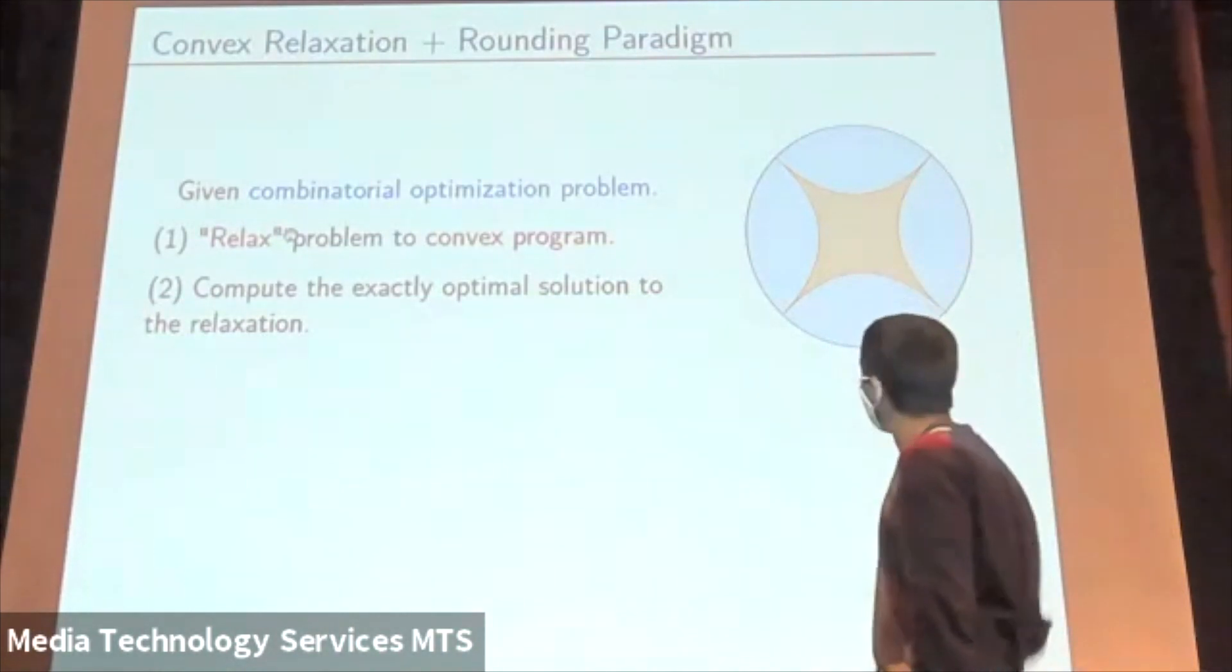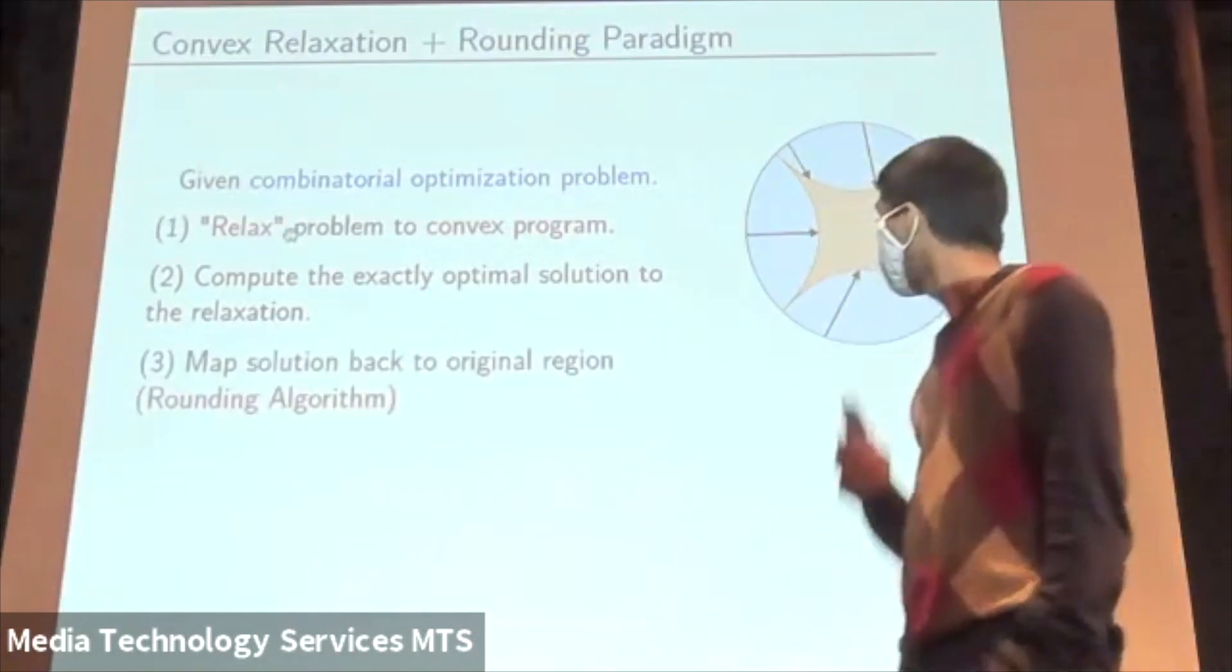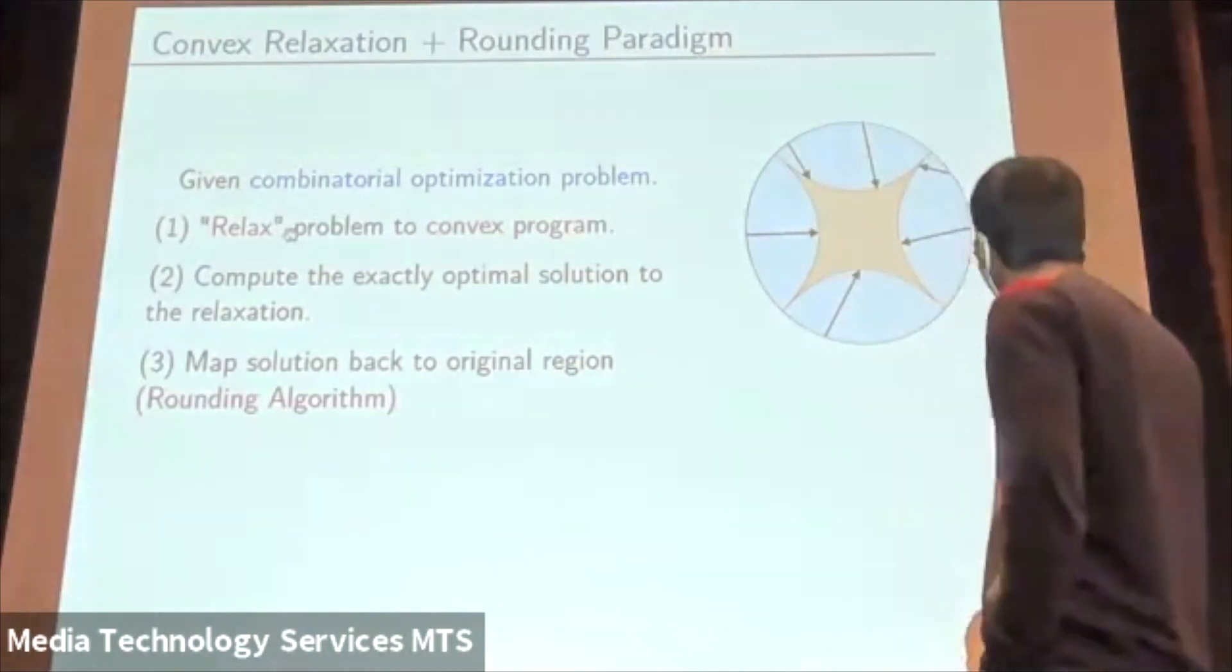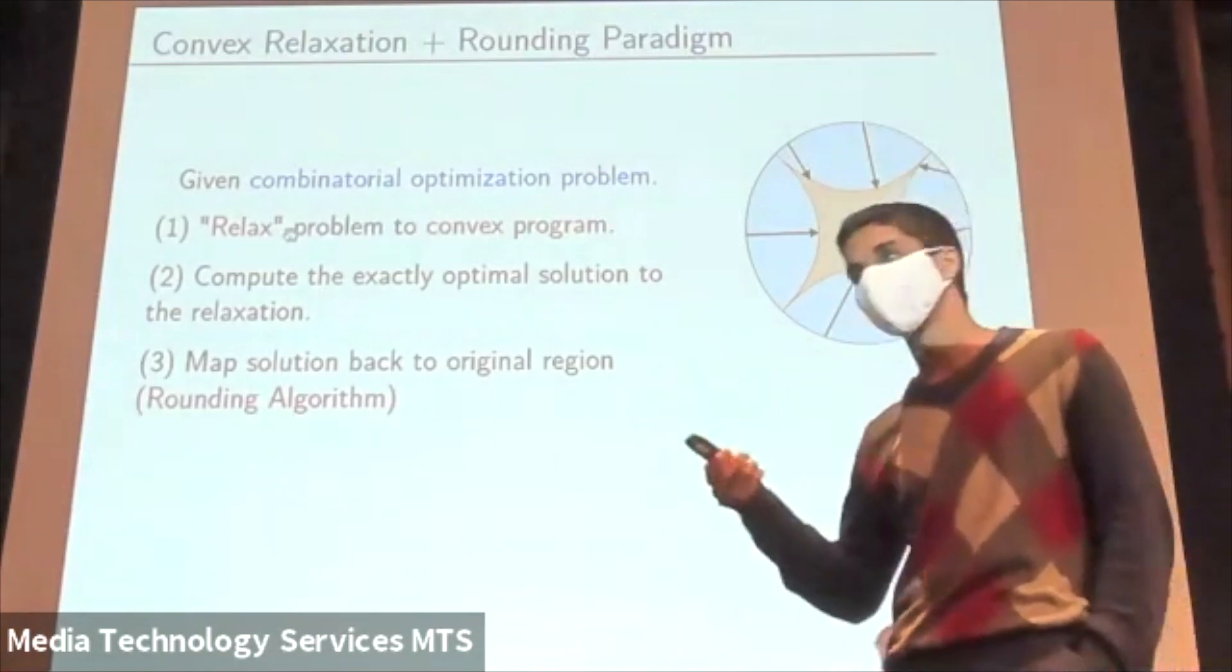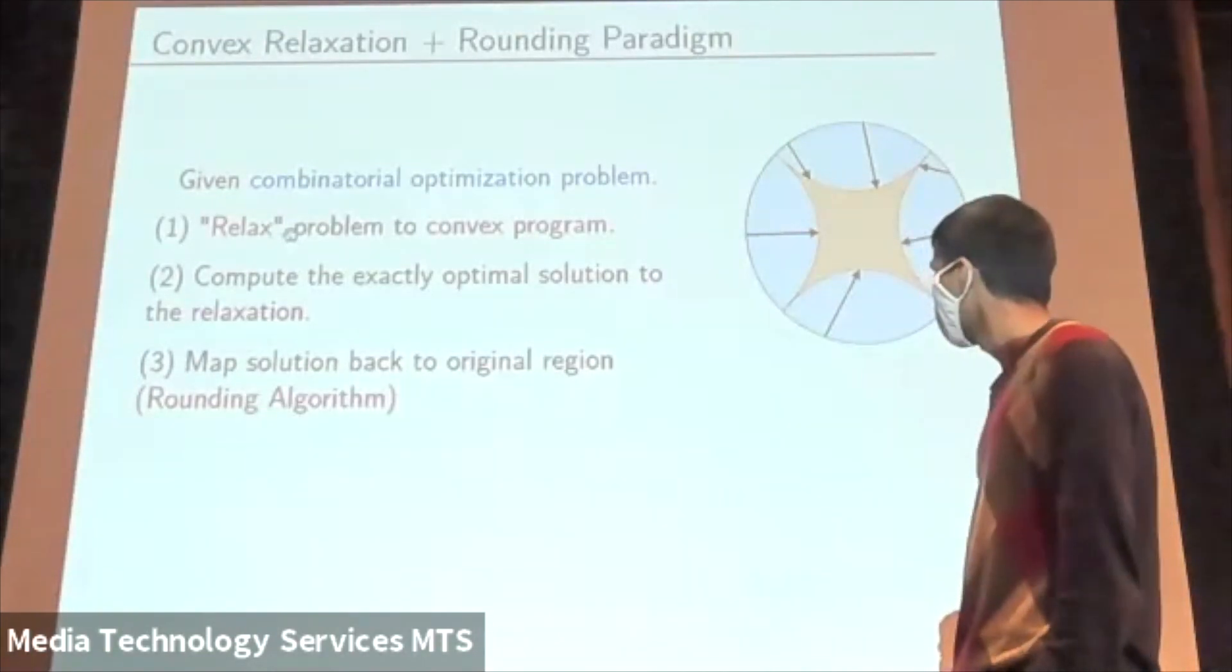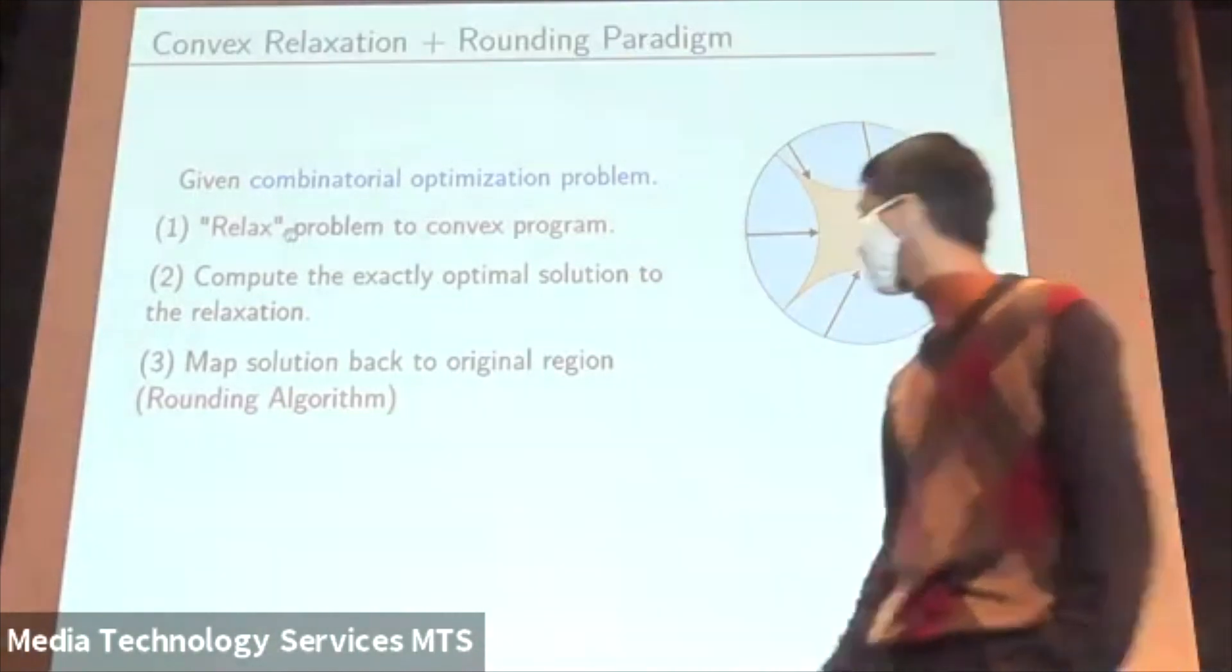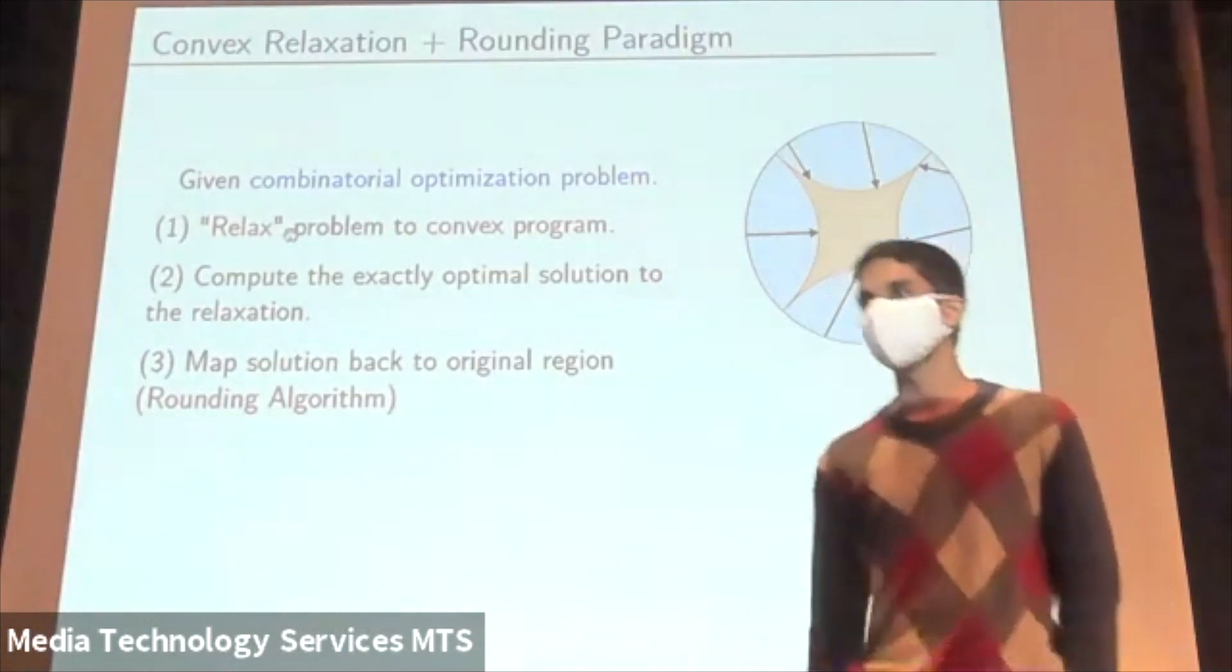In the picture, we can imagine the inner set is the set S1 and the outer set is the convex set S2. We can solve this convex program exactly using the algorithm I mentioned earlier. Finally, you take the optimal solution you got and you map it back to the original region. This part of the algorithm also has freedom. In most cases, it turns out that an approximation algorithm comes equipped with such a rounding algorithm. We refer to this final step of taking a point in the outer region and mapping back to the inner region as a rounding algorithm.